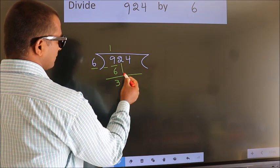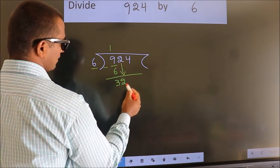After this, bring down the beside number. So 2 down. So 32.